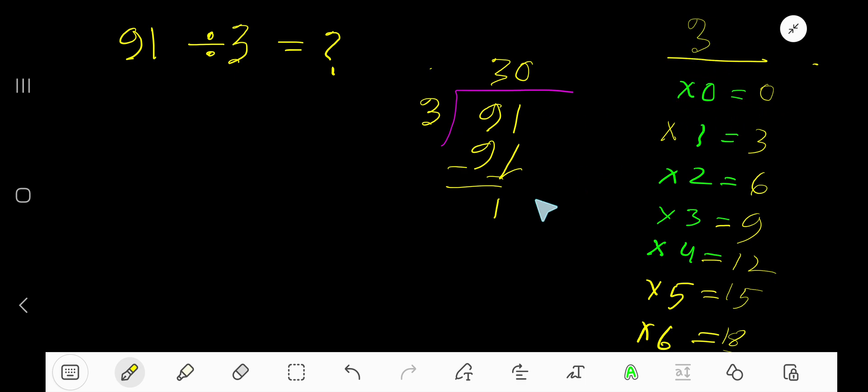0 times 3 is 0. Subtract 1. So our answer is 30, remainder 1.